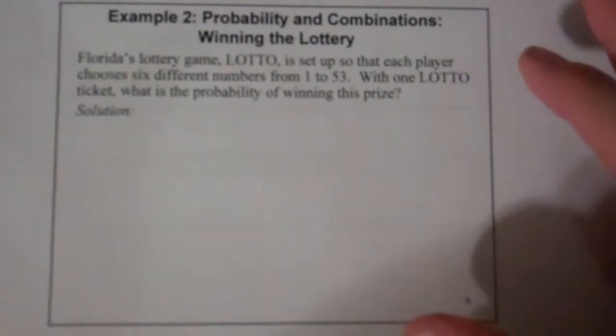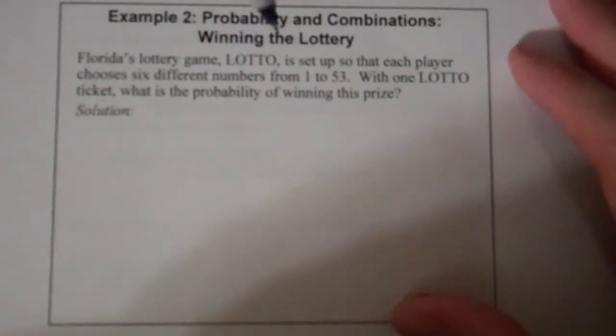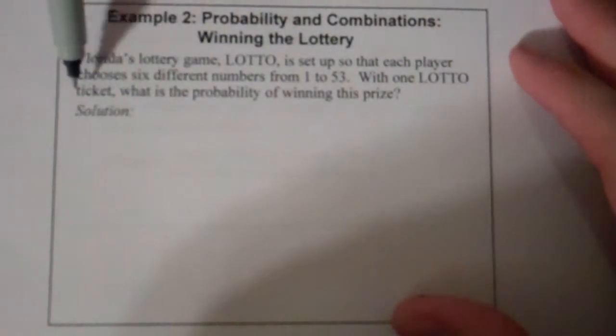Now our favorite, the lottery. So Florida's lottery game lotto is set up so that each player chooses six different numbers from one to 53. With one lotto ticket, what is the probability of winning this prize?